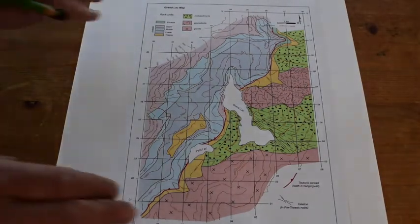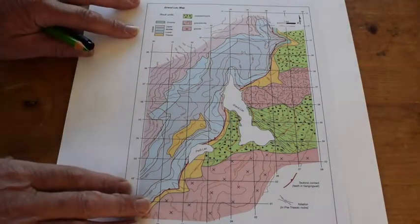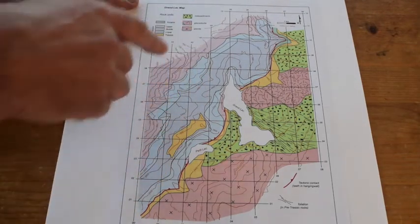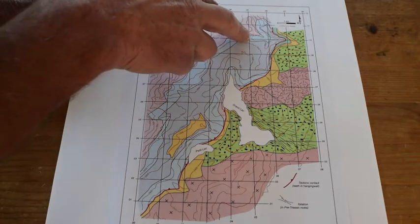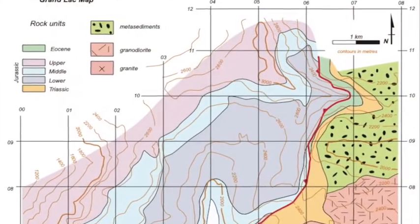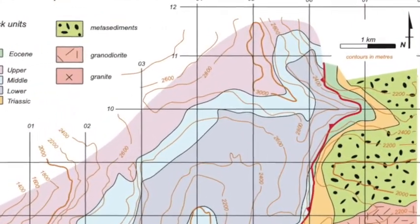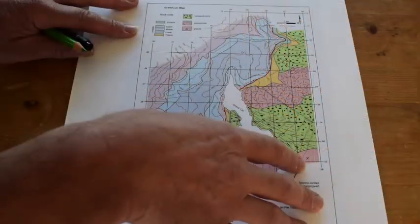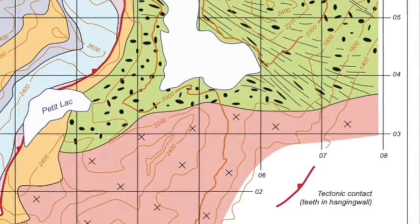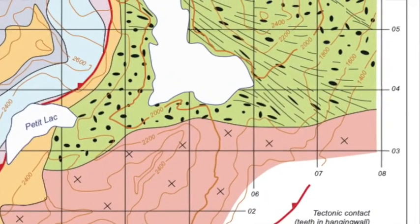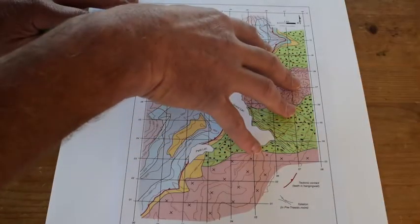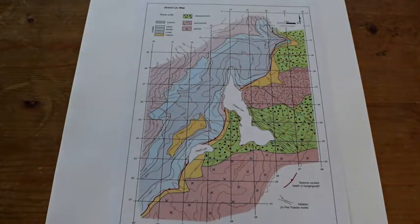This geological map is inspired by an area in the French Swiss Alps and there's quite a lot of topography in here. The topography is shown by these brown contours and they go up to 3,000 meters here and down below 1,400 meters in this corner. So there's one and a half kilometers of relief and we can use this relief to build up a 3D understanding of the geological structure here.